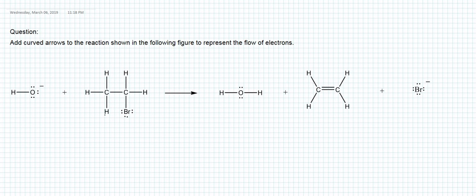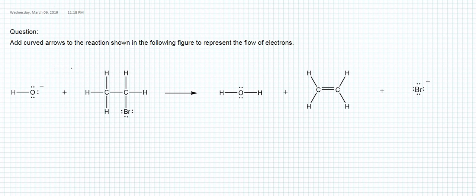We have to start drawing arrows from a lone pair and end the curved arrows at the atom we are going to bond with. Basically, a new bond will form between oxygen and hydrogen, so we have to start from oxygen and end at hydrogen. We'll use a red marker so it's easier to see.